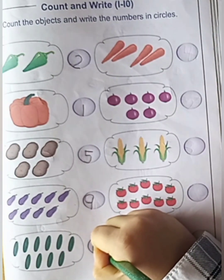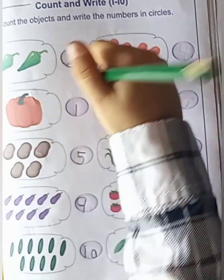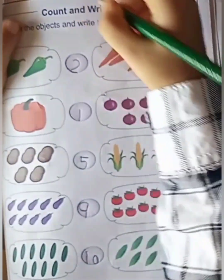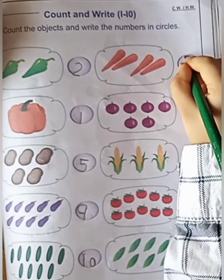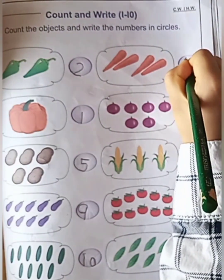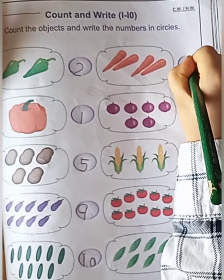Count the next object. Carrot. How many carrots are there? One, two, three, four. Very good. Number four.